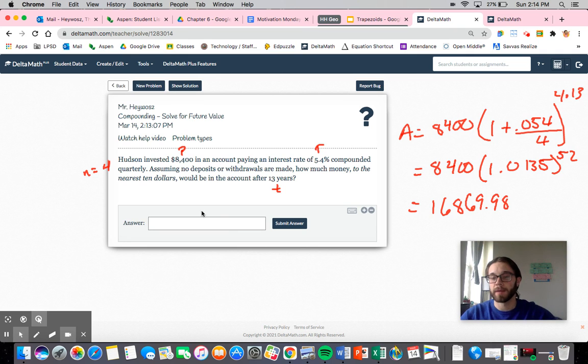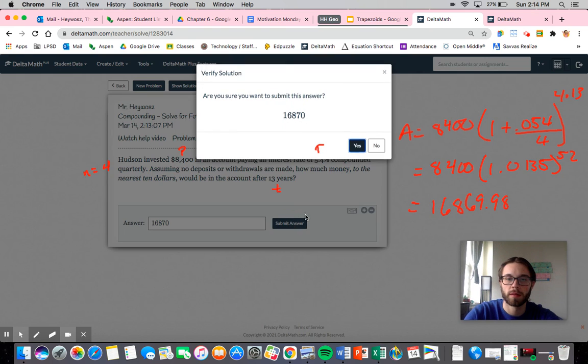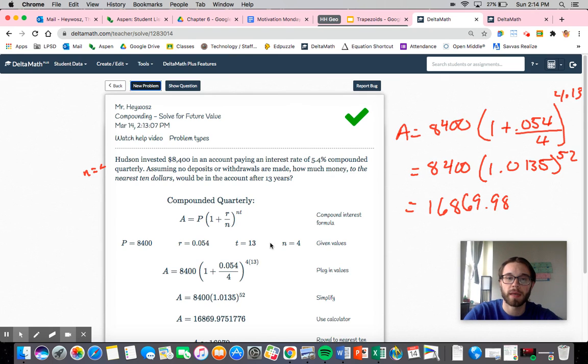And that is ultimately going to be equal to $16,869.98. Now it wants me to round to the nearest $10, so that would be $16,870. Make sure I did that correctly and we are good.